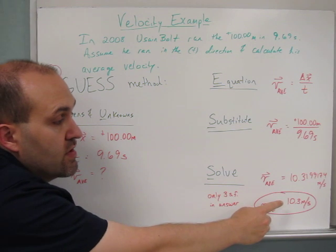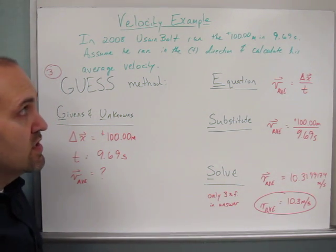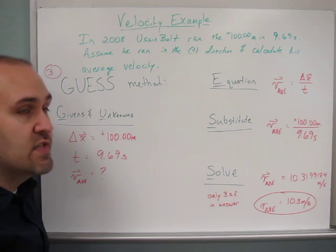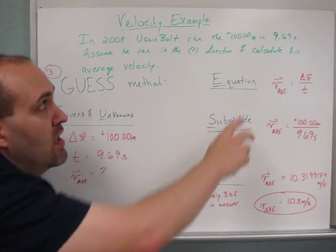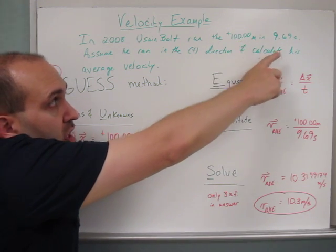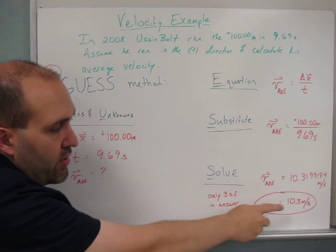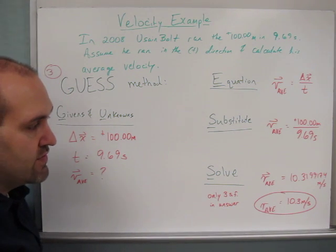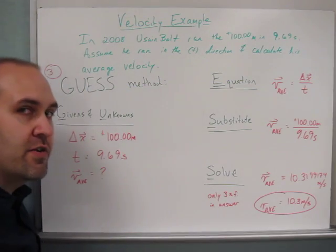And now I need to round that answer to the appropriate number of significant figures. And for us, since we're doing division, it's always the least number of significant figures I have in any of my data. So this one has five and that one has three, so I'll round it to three because that's the smaller one. So 10.3 meters per second is the average velocity. I should have put my arrow there and my plus sign—you can add that on your notes.